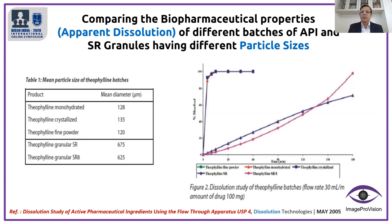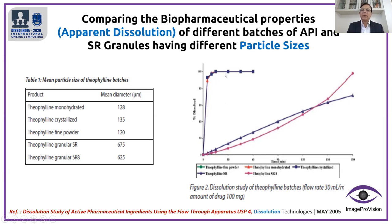Here is a comparison of dissolution profiling of different batches of API and SR granules. On the left side in the table you will see there are three different batches of API: one with 128 micron mean diameter, another with 135 micron mean diameter, and a third with 120 micron mean diameter. All these APIs have smaller particle sizes compared to the SR granules, and there is little difference between their particle sizes, so almost all three have reached 100 percent dissolution very quickly.